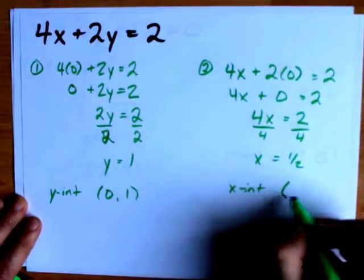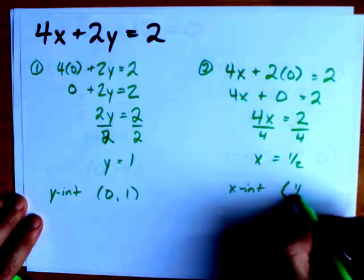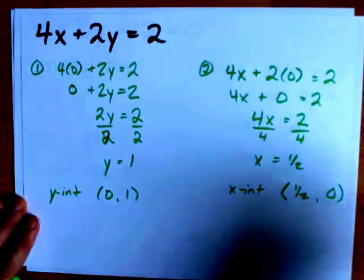That means that my x-intercept here is at 1/2, or (0.5, 0).